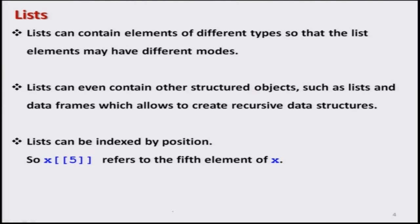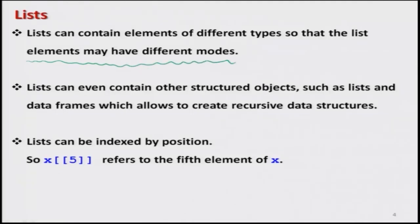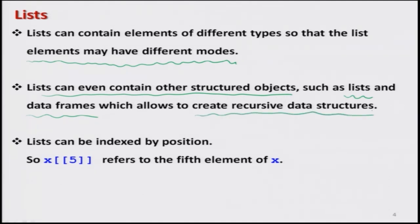A list is a special type of object that can have multiple types of data, or data in multiple modes. One basic characteristic to keep in mind is that in a list, the elements do not need to be of the same type — they can be of different types. That is the advantage of a list over a vector, matrix, or array. A list can also contain structured objects such as another list, a matrix, data frames, and so on. Using this, we can create different types of data structures.